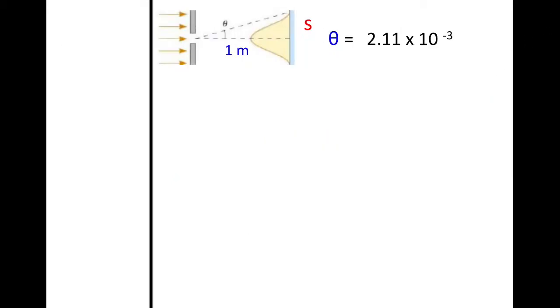Now that we know what θ is, we can actually find what s is, this distance here, in order to find the full length of the central maximum. If we know θ, we know we can take the tangent of θ and that would be s over this distance here, which would be one meter.